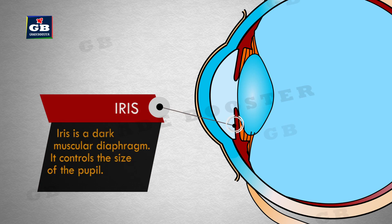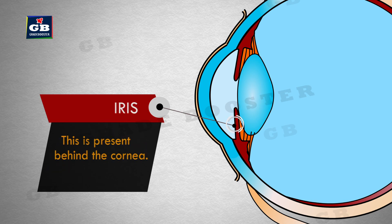This is the iris. The iris is a dark muscular diaphragm. It controls the size of the pupil and is present behind the cornea.